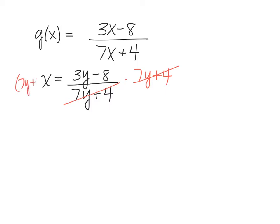So over here we'll multiply by 7y plus 4. And then, let me write that down one step below, that gives me 7y plus 4 times x, I'll just put them both in parentheses so I remember that I'm multiplying, equals 3y minus 8.